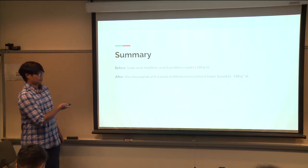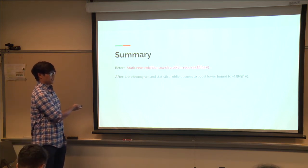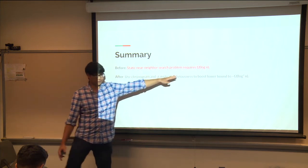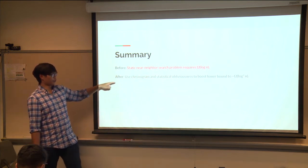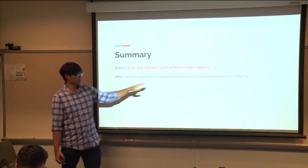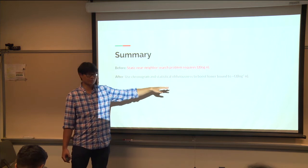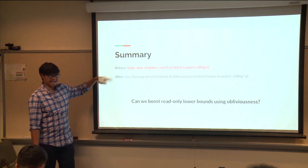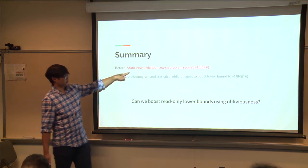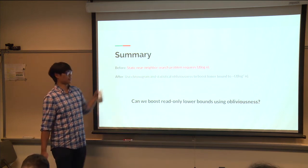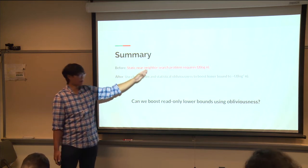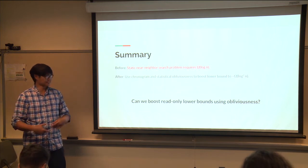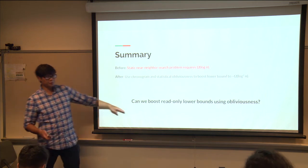The static near-neighbor search lower bound via cell sampling remains omega log n. The chronogram plus cell sampling program gets you to log-squared n. A natural question is: is this the best we can do? For oblivious static near-neighbor search, Hua Cheng and Omri noted that getting above omega log n in the static setting has implications for rigidity and locally decodable codes.